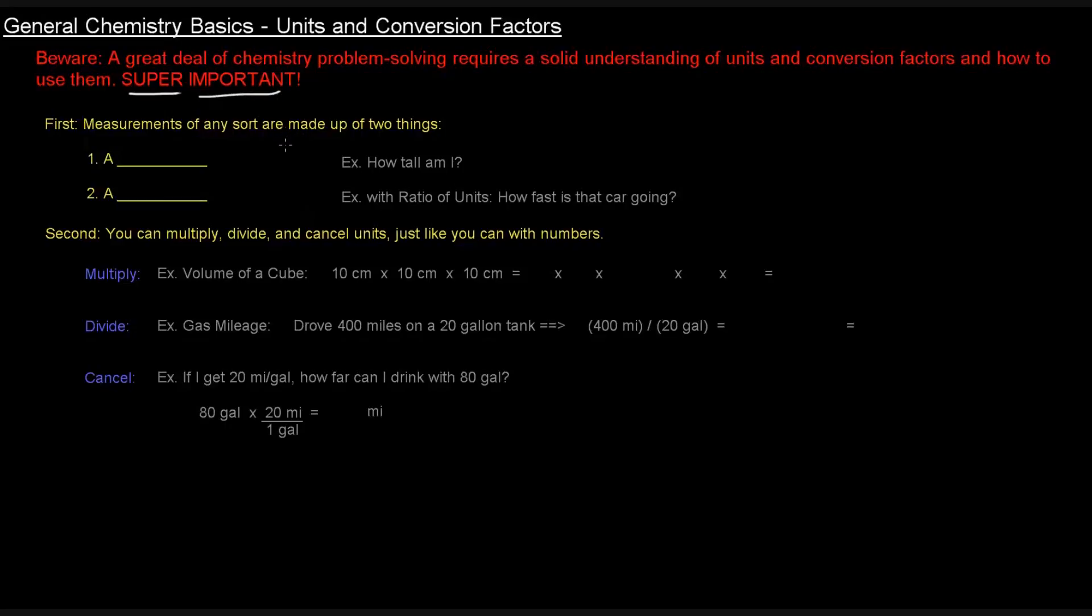The first thing that we need to know is that measurements of any sort are made up of two things: a number and a unit or units. For example, if someone asks how tall am I, I would tell you I'm six one. But specifically, anyone who hears that understands that means I'm six feet and one inch tall.